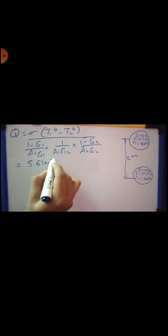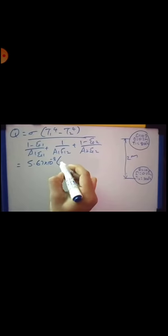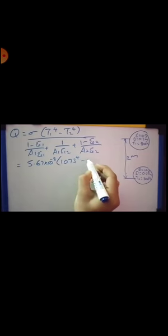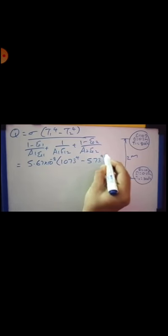The formula for Q is equal to sigma into T1 raise to 4 minus T2 raise to 4 divided by 1 minus epsilon 1 divided by A1 epsilon 1 plus 1 divided by A1 F12 plus 1 minus epsilon 2 divided by A2 epsilon 2. Substituting the values, that is 5.67 times 10 raise to minus 8 into 1073 raise to 4 minus 573 raise to 4.